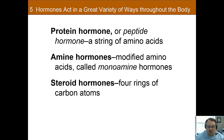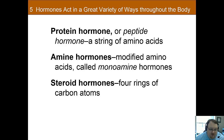There are three main types of hormones that you'll be responsible for knowing, and they differ from each other based on their chemical structure. A protein hormone, also sometimes called a peptide hormone, is composed of a string of amino acids, with different protein hormones consisting of different combinations of amino acids. It's a protein that acts as a hormone, as a chemical messenger throughout the body.